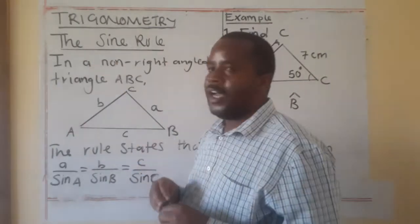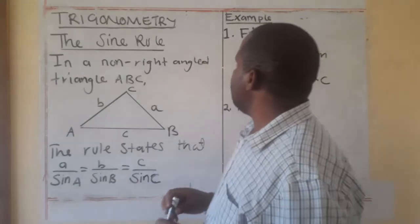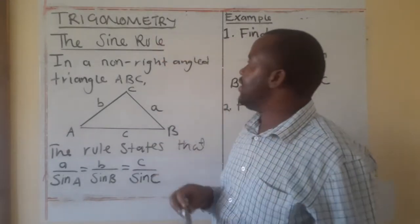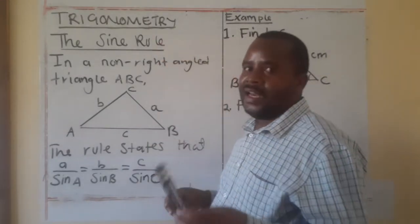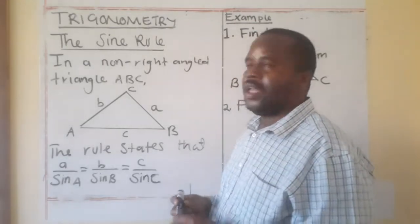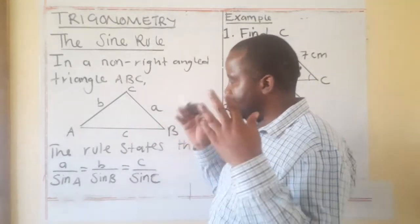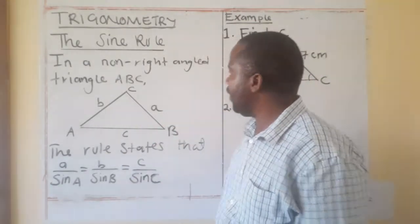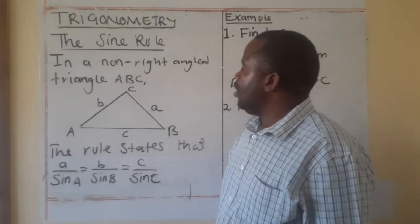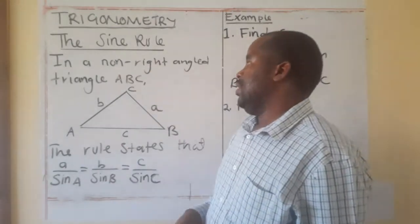You must note that the Sine Rule works on the non-right-angled triangle, while SOHCAHTOA works on the right-angled triangle. Now, what does the Sine Rule state?